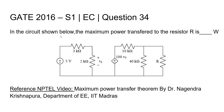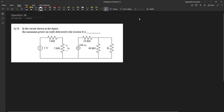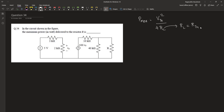Therefore, in this network, when R is equal to the Thevenin resistance of this network, maximum power will be transferred to it. First, let us find out the value of this resistance and hence find out the maximum power. The maximum power is given by Vth squared divided by 4 times RL. For maximum power transfer, RL should be equal to Rth — only then maximum power will be transferred to the load.